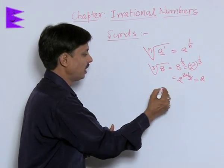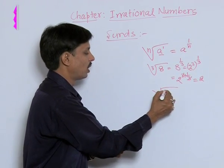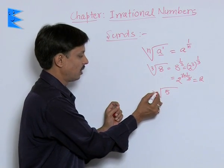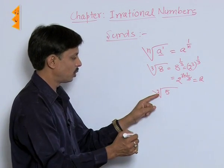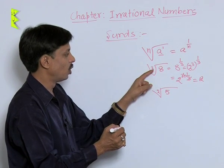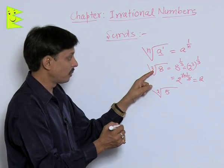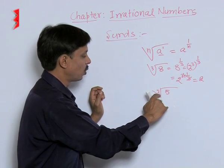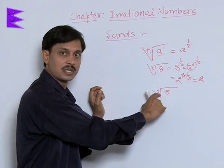If I say square root of 5, suppose square root of 5 is to be discussed, then the order of SIRd is what? 2. Nothing is written. This is known as order of SIRd. Here 2, here order of this expression is 3. Order of this value is n. This is known as the order of SIRd.